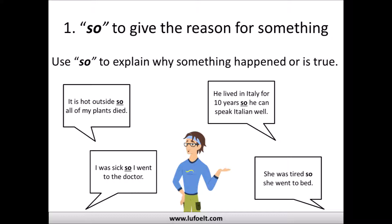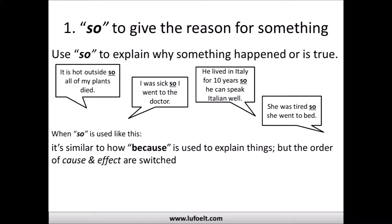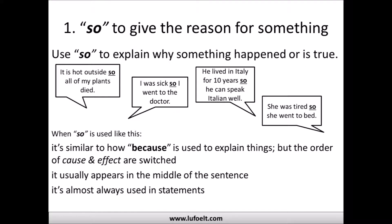Using 'so' in this way is similar to using 'because' — both explain cause and effect — but the order is switched. With 'so,' the cause comes first and the effect comes second: 'I was sick so I went to the doctor.' With 'because,' the effect comes first and the cause comes next: 'I went to the doctor because I was sick.' When used this way, 'so' usually appears in the middle of the sentence.